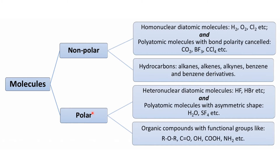Now let's see the molecules which can be polar. They can be heteronuclear diatomic molecules — so here it was homonuclear and here it is heteronuclear. Examples can be HF, HBr, etc. Also polyatomic molecules which have an asymmetric shape, due to which the bond polarity doesn't get cancelled — examples can be water, SF₄, etc.